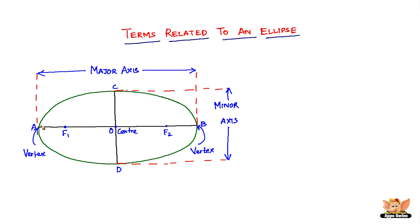The green curve represents an ellipse. In the previous video, we did see what an ellipse actually is — we saw the definition of an ellipse. So in this video, what we are going to see are the important parts of an ellipse.